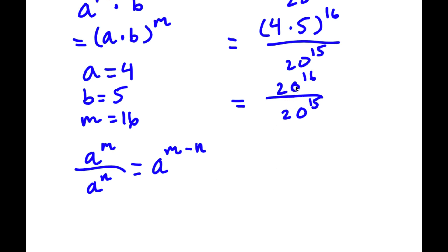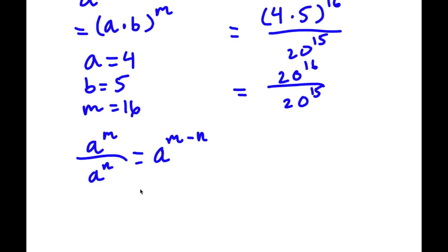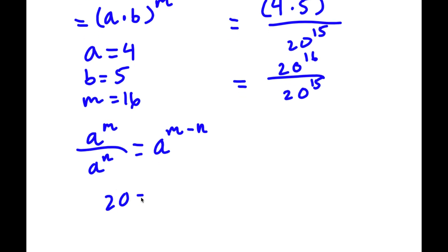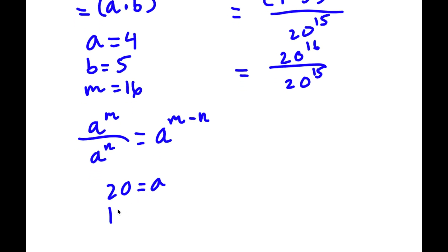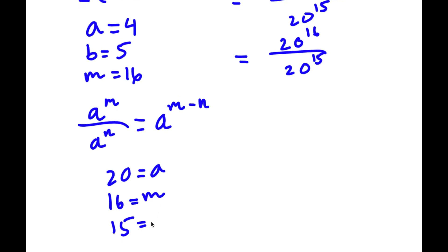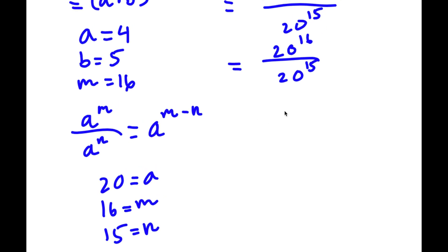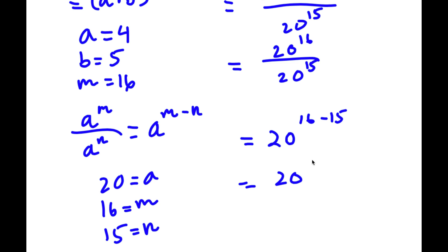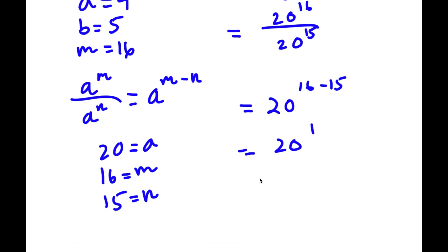So in this case we have 20 to the power of 16 divided by 20 to the power of 15. We can think of 20 as a, 16 as m, and 15 as n. So now this is going to equal 20 to the power of m minus n, so 16 minus 15. 16 minus 15 is equal to 1, so we have 20 to the power of 1. And anything to the power of 1 is itself, so 20 to the power of 1 is simply 20.